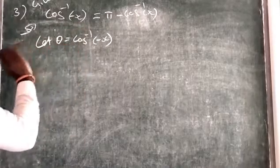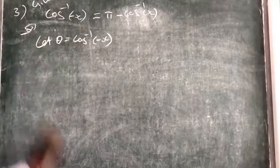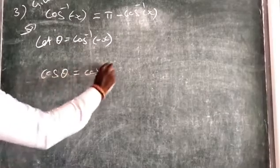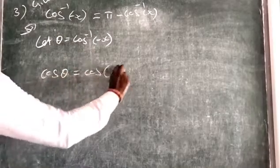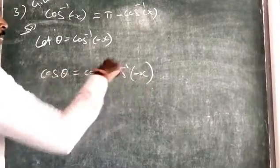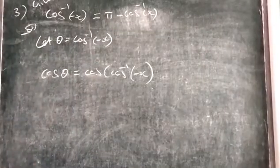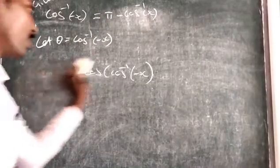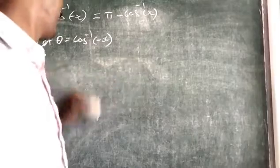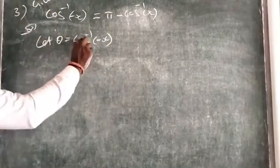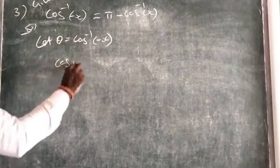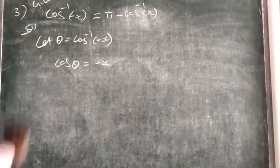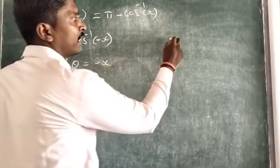Now we multiply both sides by cos, taking cos of both sides. We take cos of cos⁻¹(-x), and we are able to eliminate, so we get cos(θ) = -x. One more way to say this: cos⁻¹ from this end becomes cos(θ) = -x.